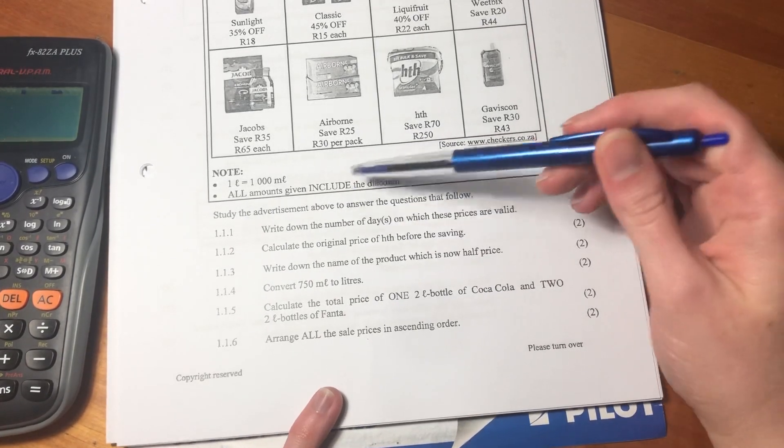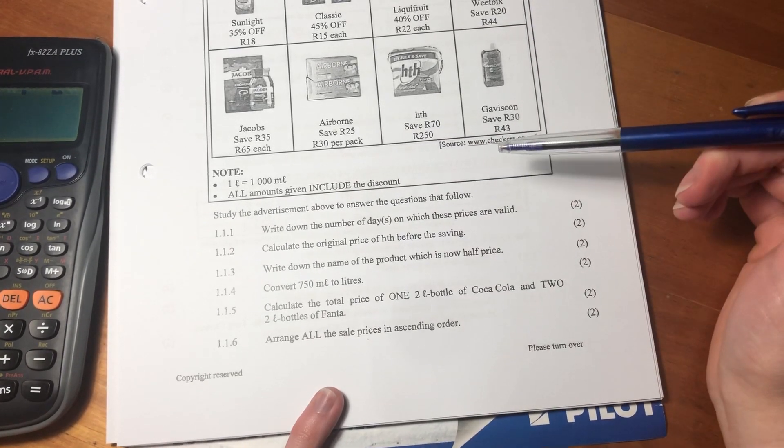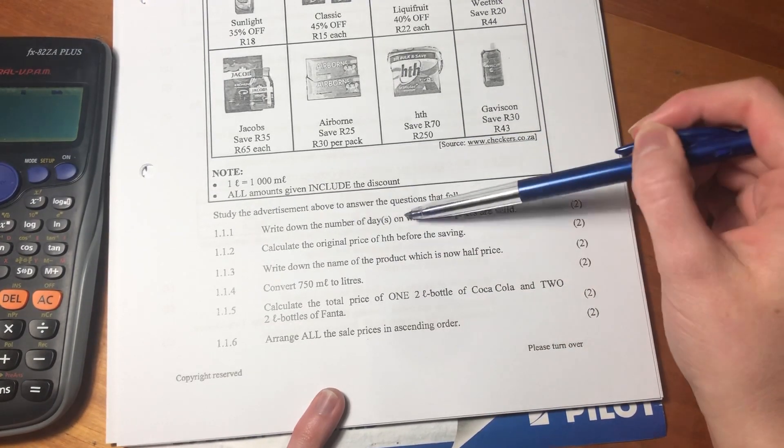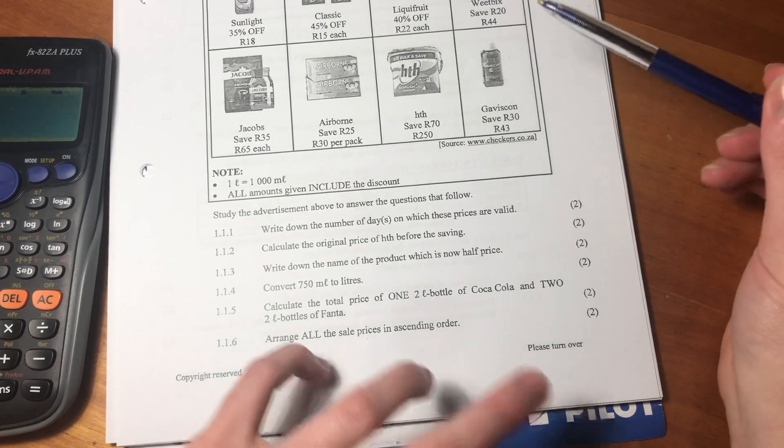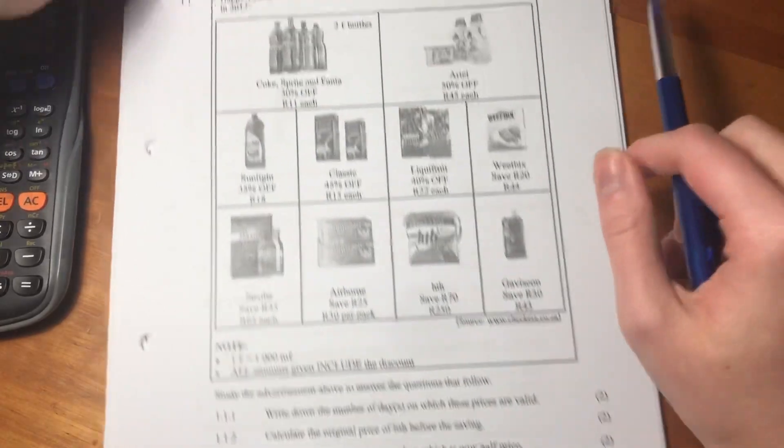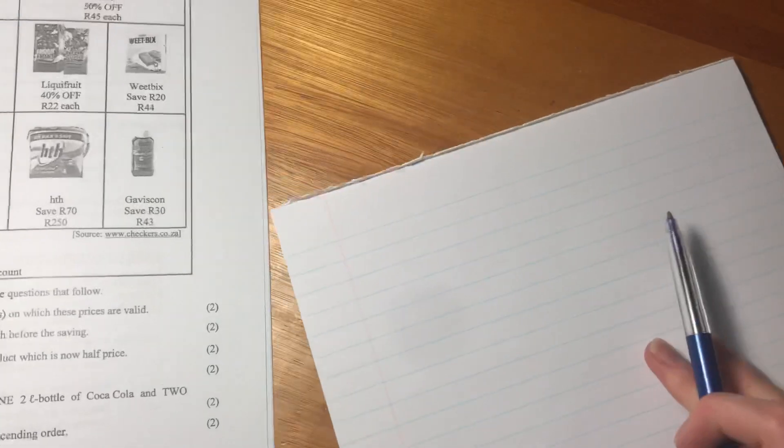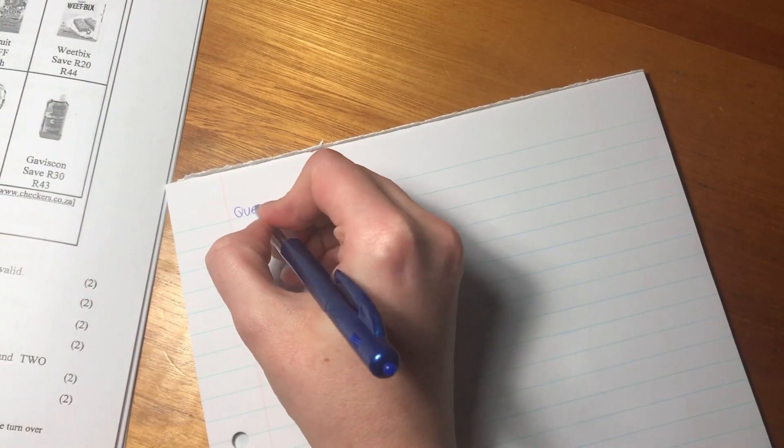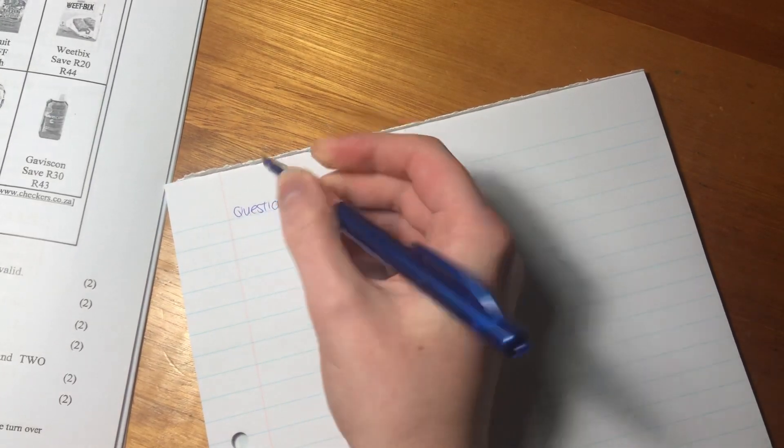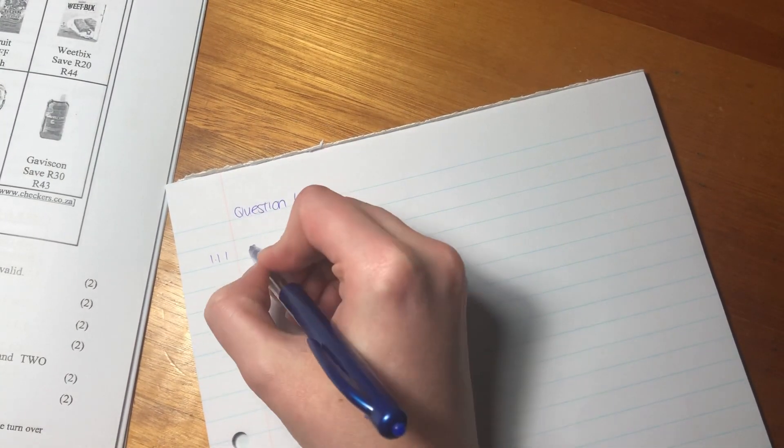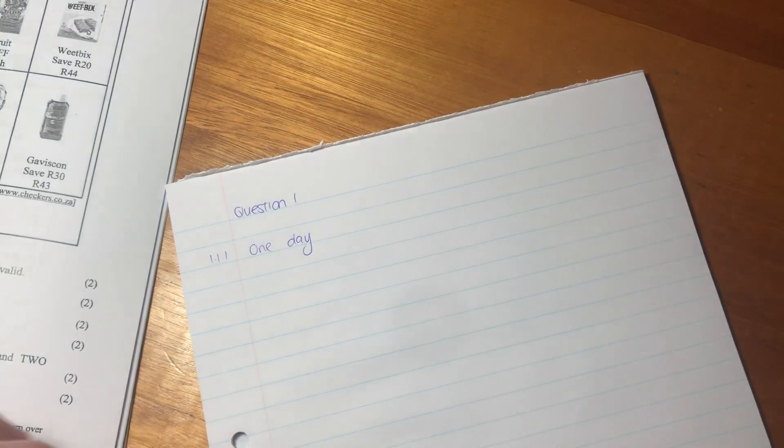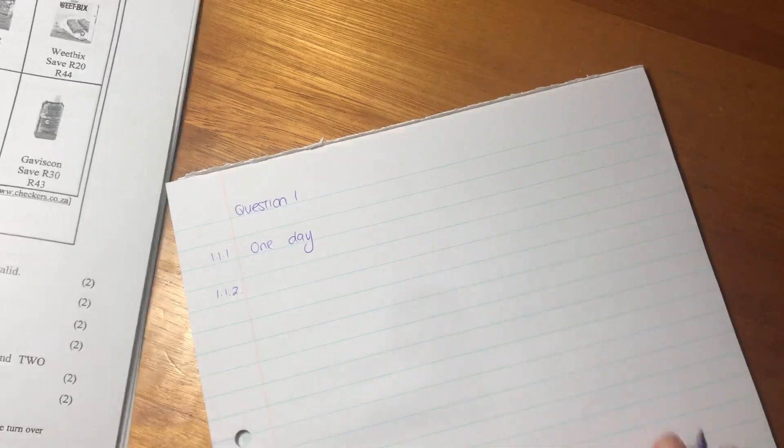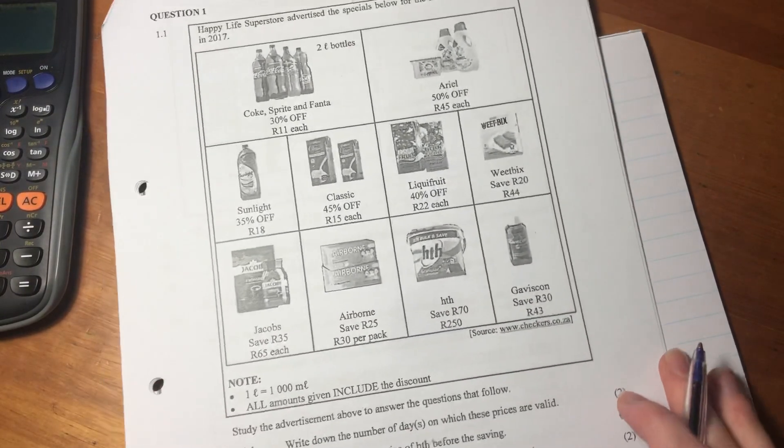It says study the adverts above to answer the questions that follow. 1.1.1: Write down the number of days on which these prices are valid. That's a bit of a weird one, must be honest, because it's Black Friday. It's one day. Sometimes these questions seem too obvious to be the answers that they are, but it's one day.